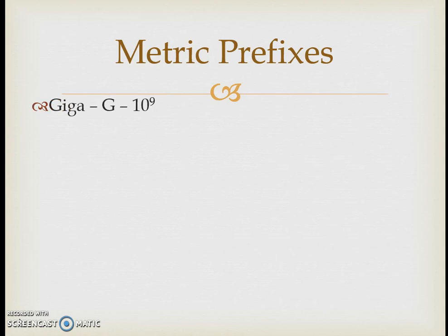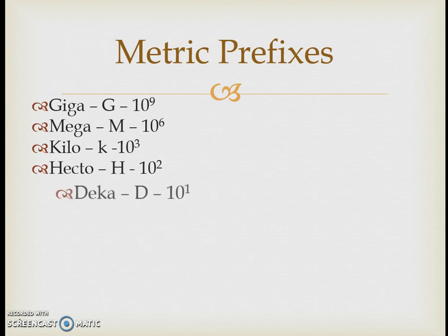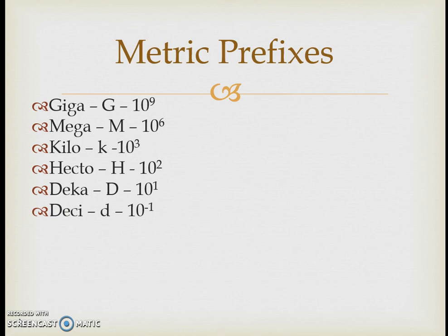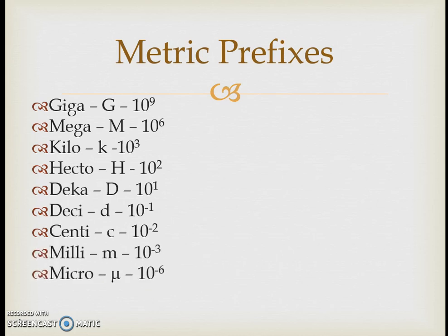Like we saw with the kilogram, there are metric prefixes corresponding to powers of 10 that attach to any unit. For large quantities: giga is 10 to the 9th, mega is 10 to the 6th (like a megabyte), and kilo is 10 to the 3rd. Hecto is 100 times larger and deca is 10 times larger. For smaller quantities: deci is one tenth, centi is 10 to the negative 2, milli is one thousandth, and micro is 10 to the negative 6.